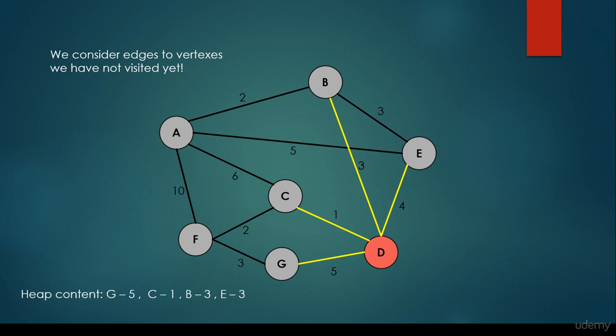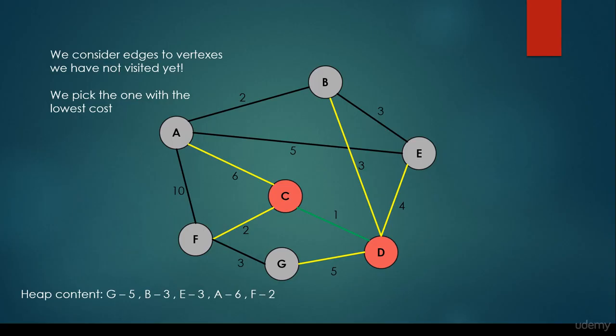We have to get the edge with the minimum edge weight on every iteration. We set the given vertex to be visited, push these edges onto the heap, and what's very important is that we are not going to update the heap content — that's why this is the lazy implementation.